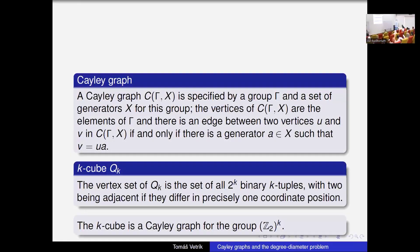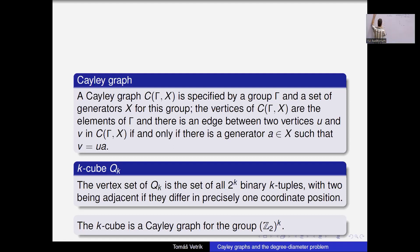Yesterday we finished with vertex transitive and edge transitive graphs. Today we will continue with Cayley graphs, which actually belong to the main part of my course. Results will be presented called Cayley graphs. Cayley graphs are some types of vertex transitive graphs and Cayley graphs come from groups.